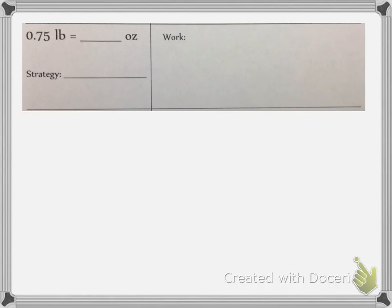Let's try this problem. We have 75 hundredths of a pound and we want to convert it to ounces. This is a decimal, so my strategy is going to be a unit rate. It's going to be easiest to solve using a unit rate. And here's why: because decimals can be written as fractions.